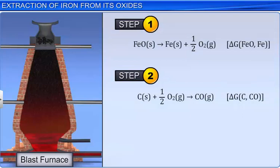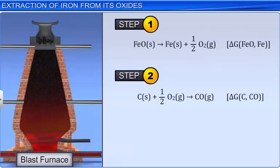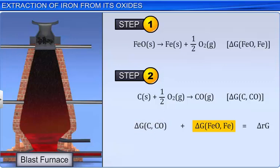This is a combination of two simple reactions. In the first reaction, ferrous oxide gets reduced to iron. Let the change in the Gibbs free energy for this reaction be delta G FeO-Fe. In the second reaction, carbon gets oxidized to carbon monoxide. Let the change in the Gibbs free energy be delta G C-CO. When the two reactions occur, the net Gibbs energy change becomes: delta G reaction equals delta G C-CO plus delta G FeO-Fe. This becomes spontaneous when delta G reaction is negative.